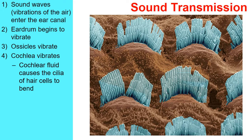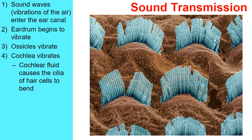Those hairs are actually cilia — certain cells have little parts that stick out of them called cilia. Here we have a grouping of hair cells with the cilia sticking out of them. When the cochlea begins to vibrate, the fluid inside rushes over and sloshes around a little bit, causing the cilia to bend. It's that bending of the cilia of the hair cells that triggers an action potential.